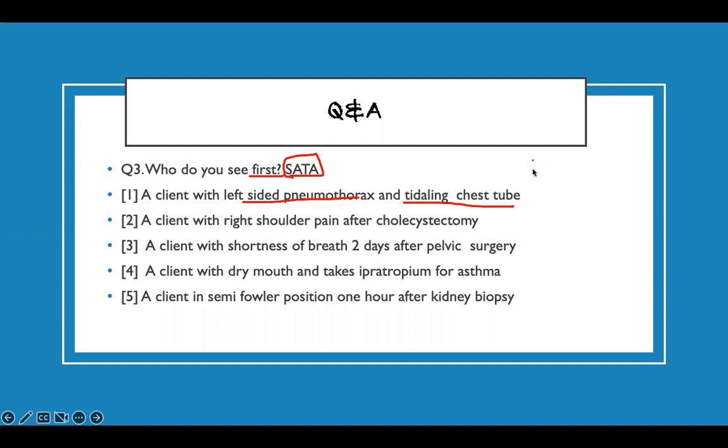What is wrong with it? You have chest tube, you have three chambers. This is the suction chamber, this is the water seal, and then this is the collection chamber connected to the patient. If I have chest tube and I have titling, it's good. Titling is good.